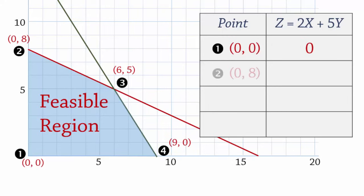And at point 2, we have 0, 8. So the objective function value is 2 times 0 plus 5 times 8 which equals 40. The coordinates at point 3 are 6 and 5. So z equals 2 times 6 plus 5 times 5 which equals 37.